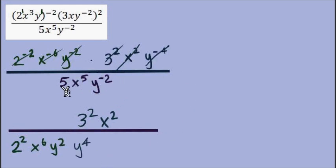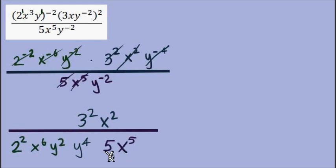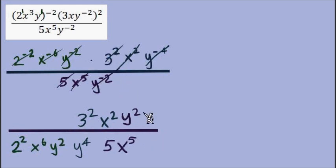Now looking at the factors in the denominator: this is a 5 — we know its exponent would be a positive 1, so it's good where it is, staying in the denominator. Same with x to the power of positive 5 — keep it where it is. Lastly, y to the power of negative 2 — negative exponent — we'll move that from the denominator up to the numerator. At this point we have all positive exponents, and we've moved anything that had a negative exponent.